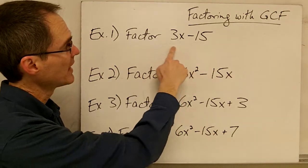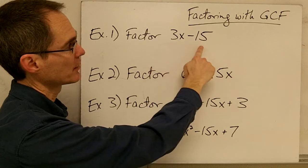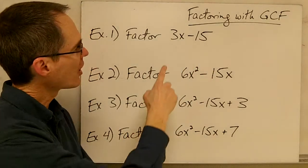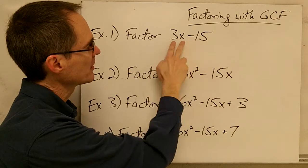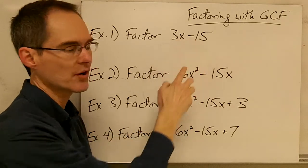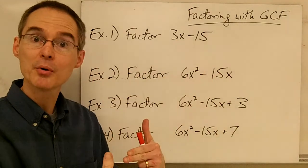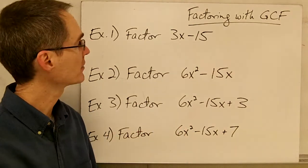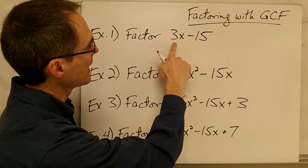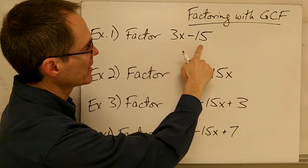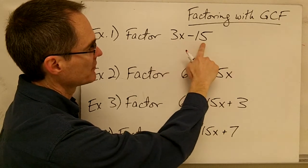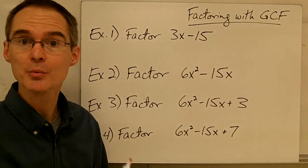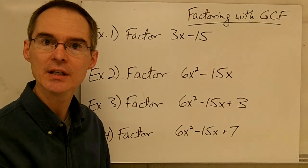For example, if I want to factor this expression right here, 3x minus 15, the first thing I want to ask myself is: are there any factors that are common to both of these terms? And if there are, then I want to pull those out — that's called pulling out the greatest common factor. In this case, I can see that 3 will go into both of those terms; it will divide evenly into both.